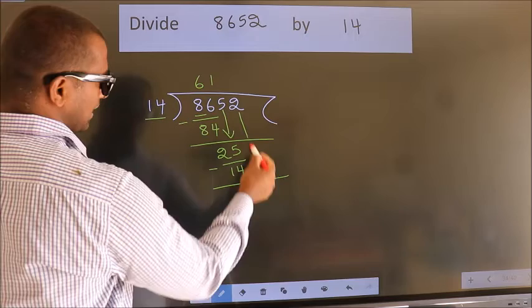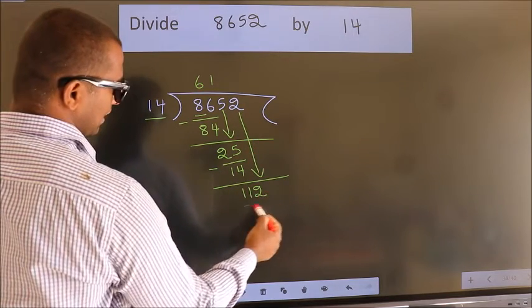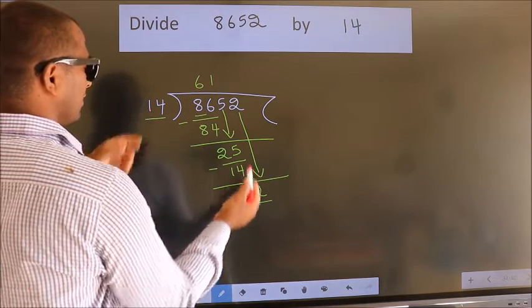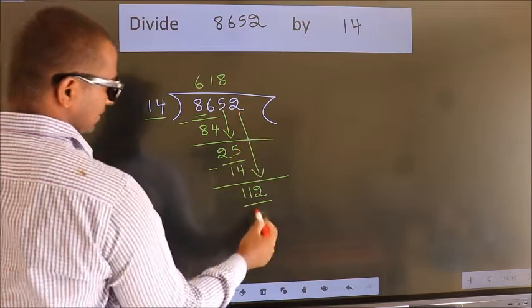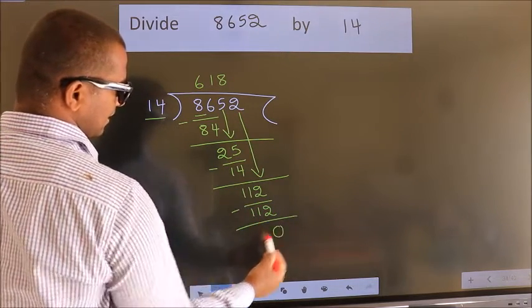After this, bring down the beside number. So, 2 down. So, 112. When do we get 112? In 14 table. 14 8s, 112. Now, we subtract. We get 0.